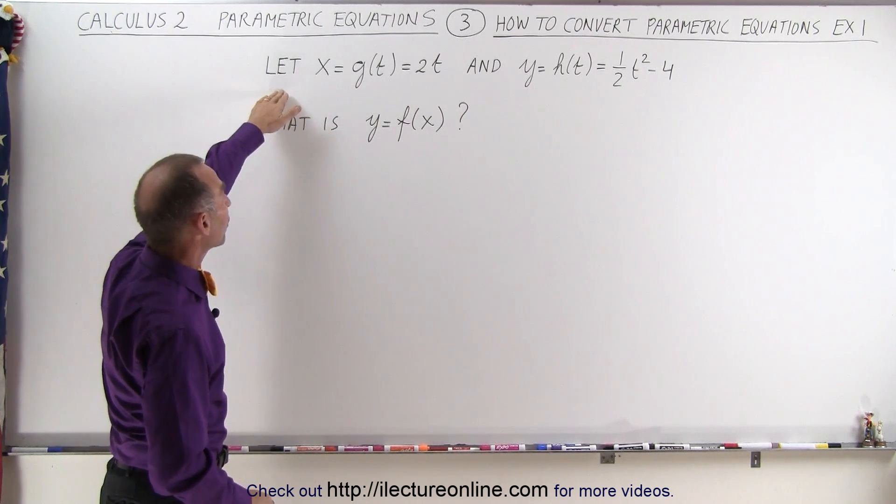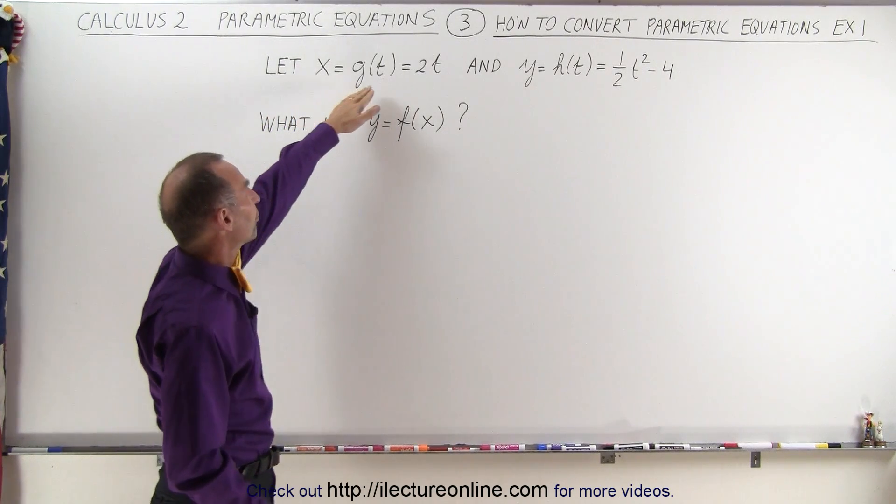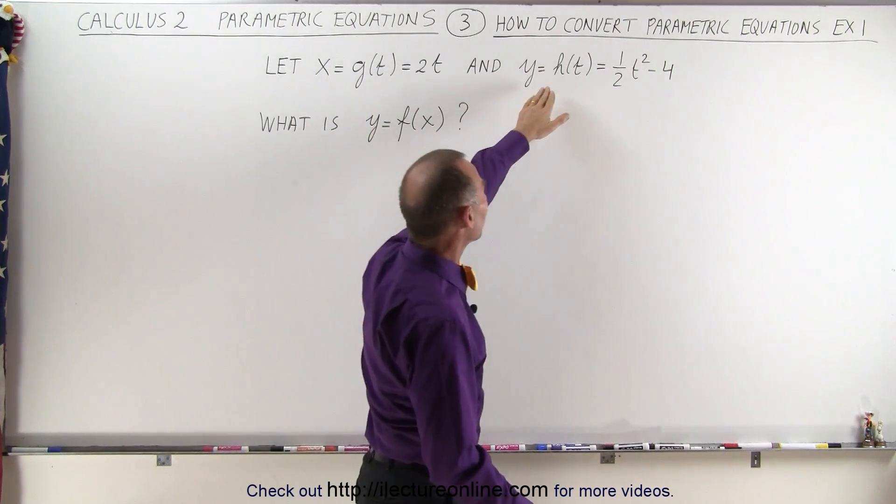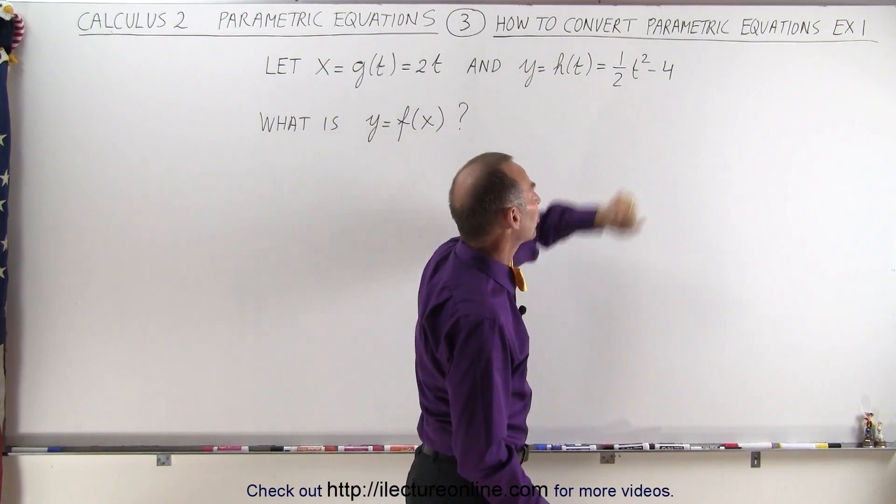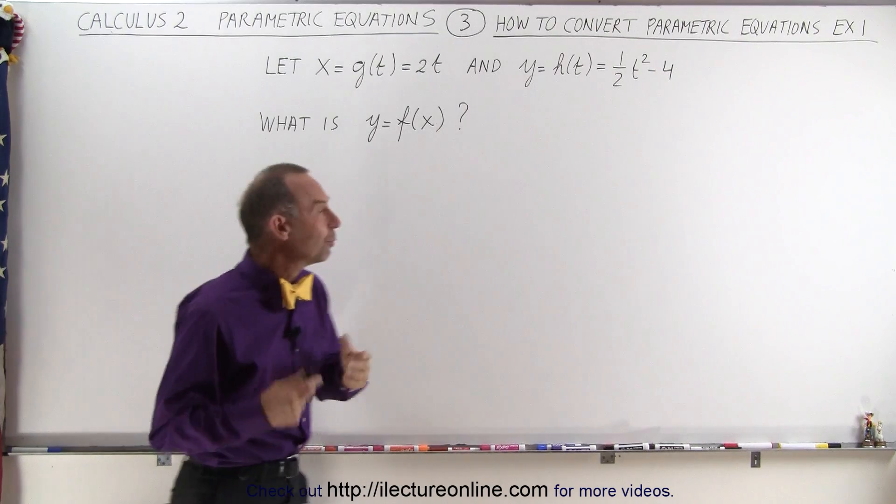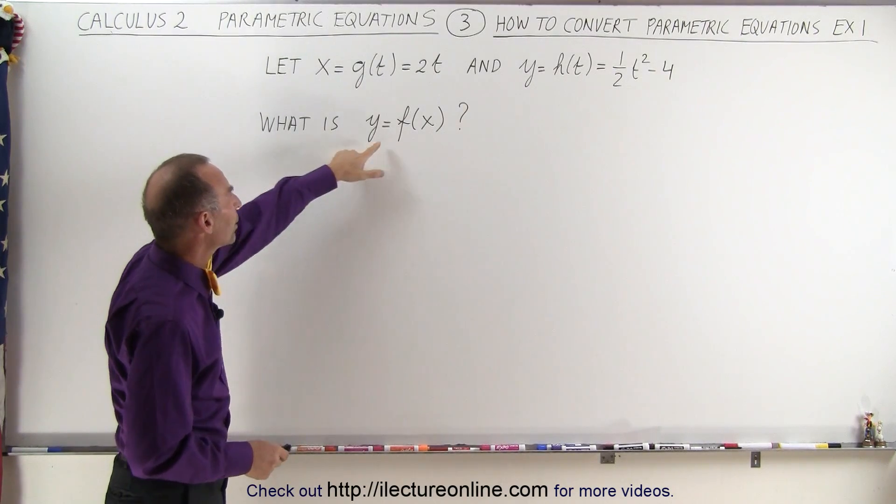If we're given these following equations, that x is some function of t equal to 2t, and y is another function of t equals one-half t-squared minus 4, how do we find the equation y equals f of x?